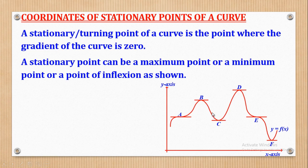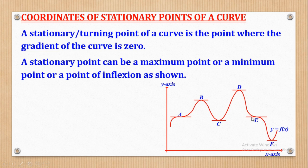For the Minimum Point, the gradient is first negative then positive. So point C is the Minimum Point. Also point F — the gradient is first negative and then positive, so F is also a Minimum Point. For Points of Inflection, the sign of the gradient doesn't change. For example, the gradient is positive before and after, making it a Point of Inflection. Similarly, point E has a negative gradient before and after, so point E is also a Point of Inflection.